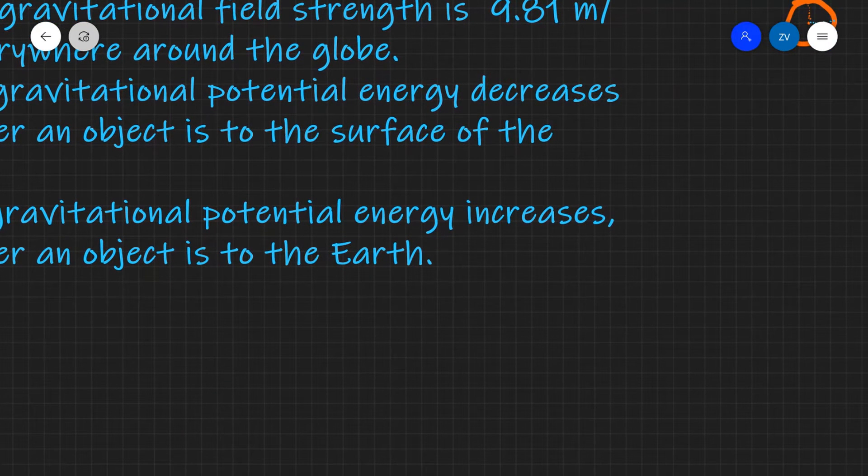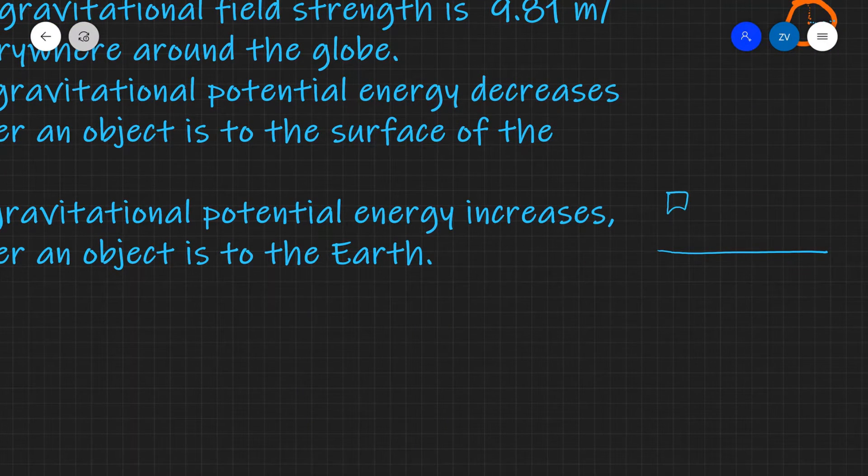For example, if you imagine dropping something, just a really simple example. If you drop something from let's say a height H, it will gain a certain velocity V. Now if you drop something from height, let's say 100H, it will gain a much higher velocity, let's call that velocity V2.